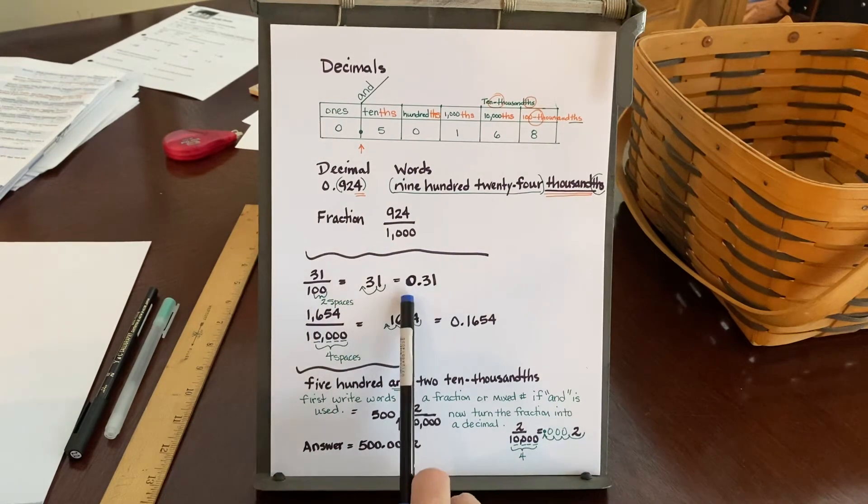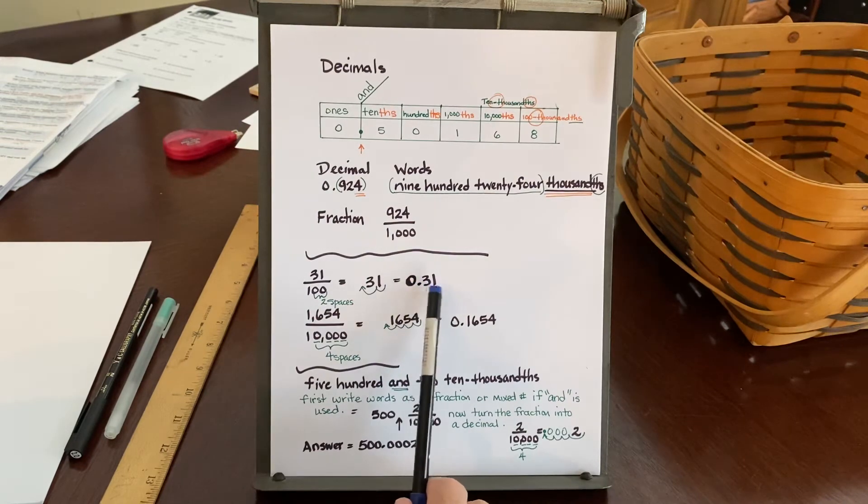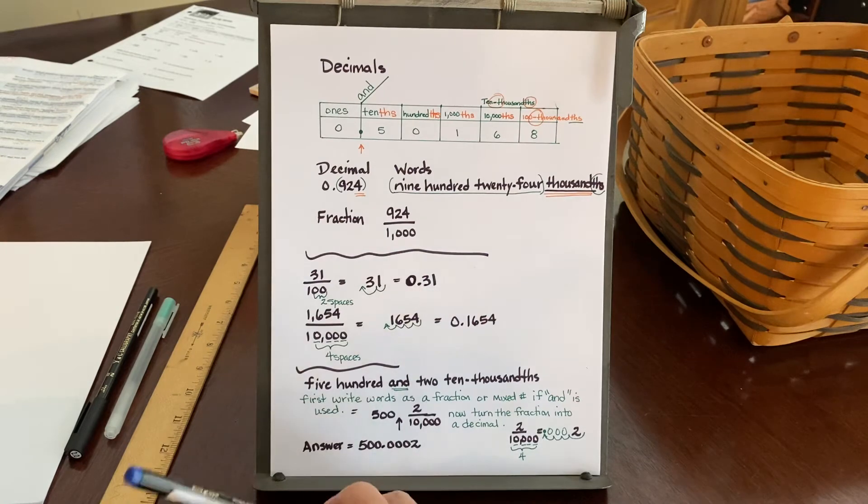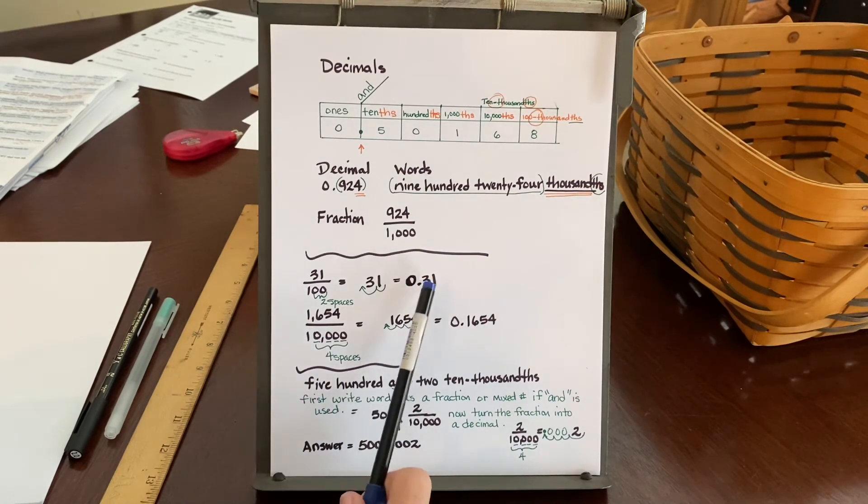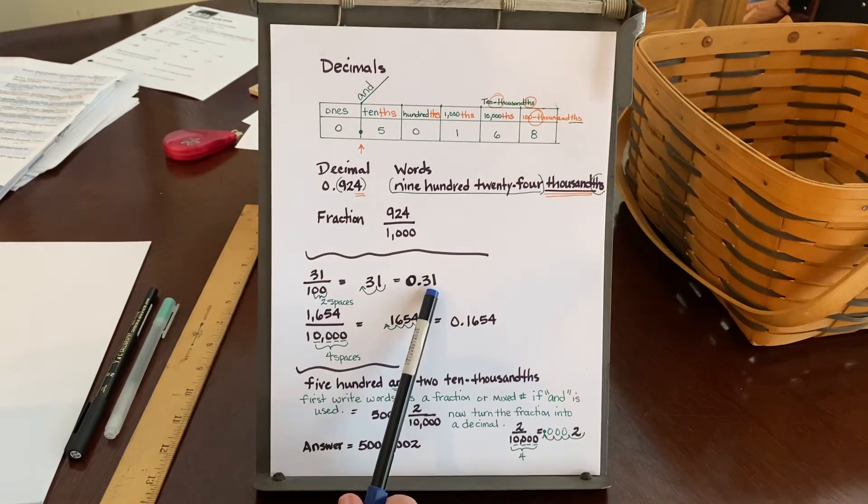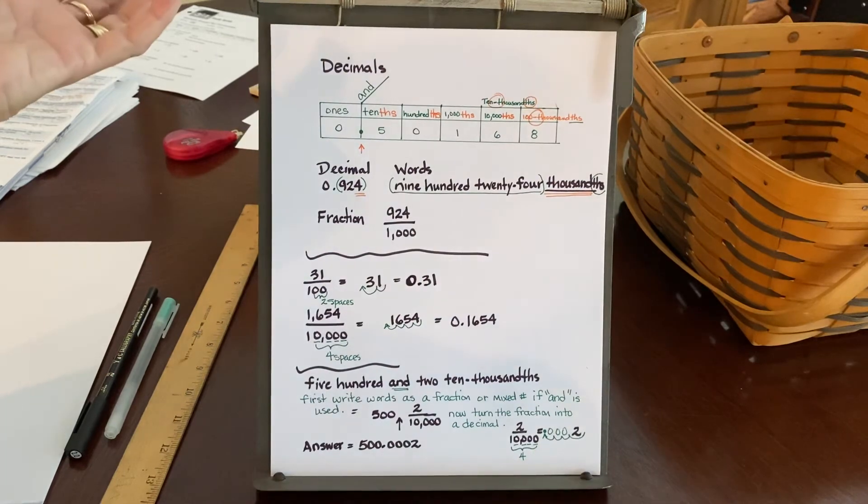And when I do that, I then get the new decimal equivalent of 0.31. And if you understand money, you know that that's 31 cents. And what that's telling you is I have 31 pennies out of 100 pennies, which would have been a dollar. So I've got 31 pieces of a dollar.